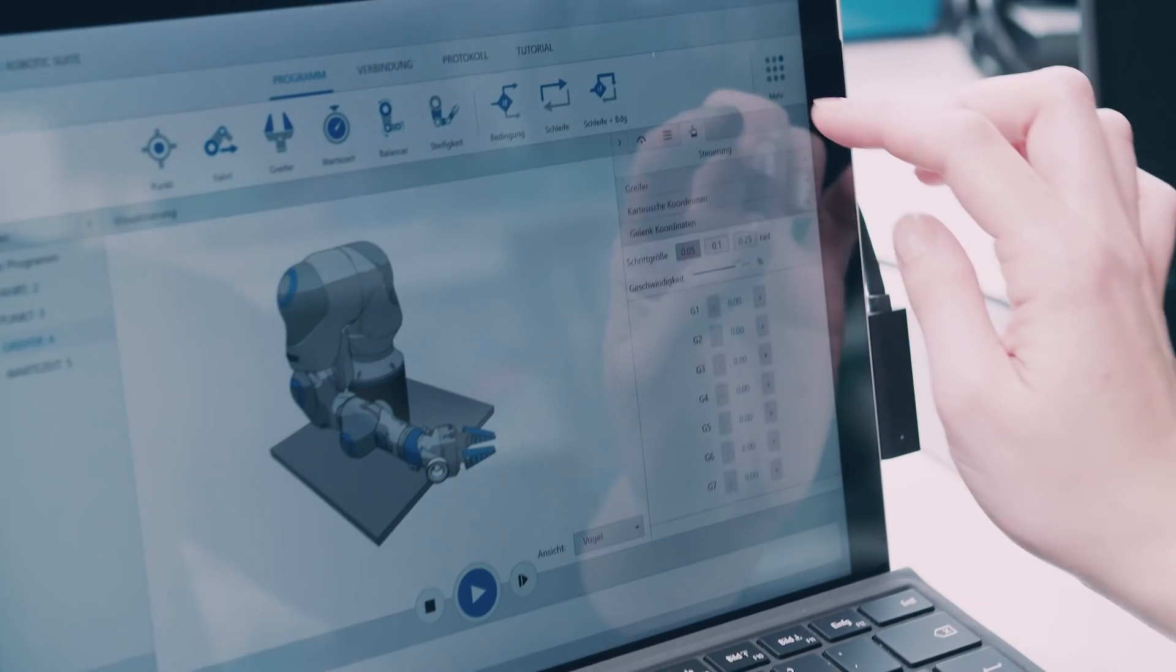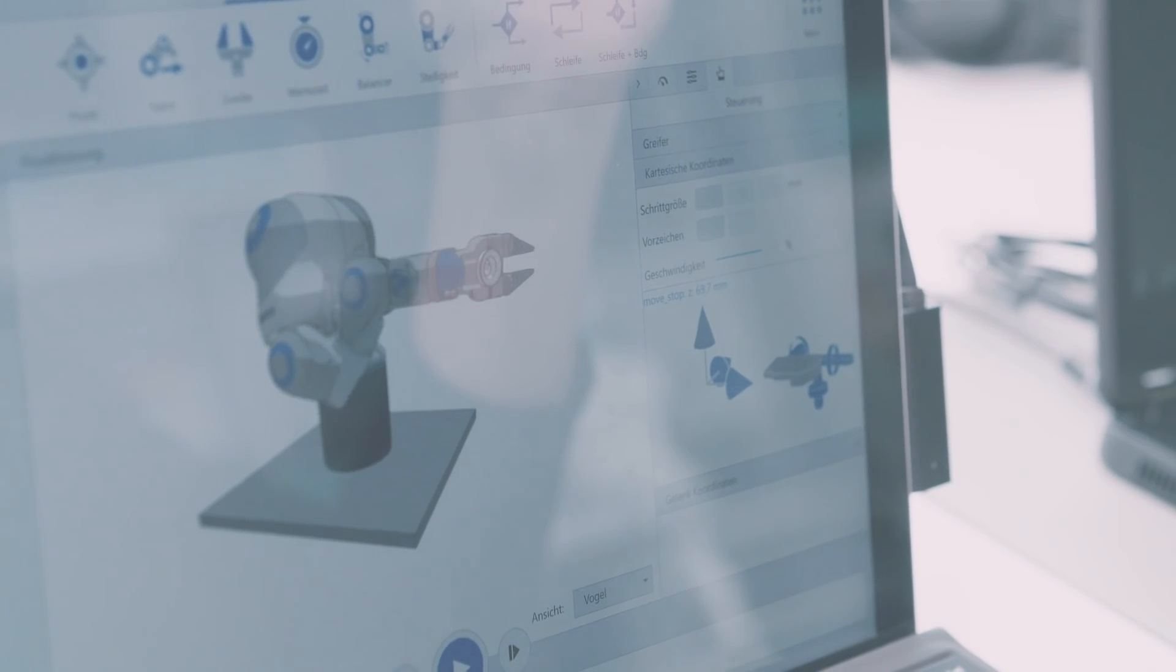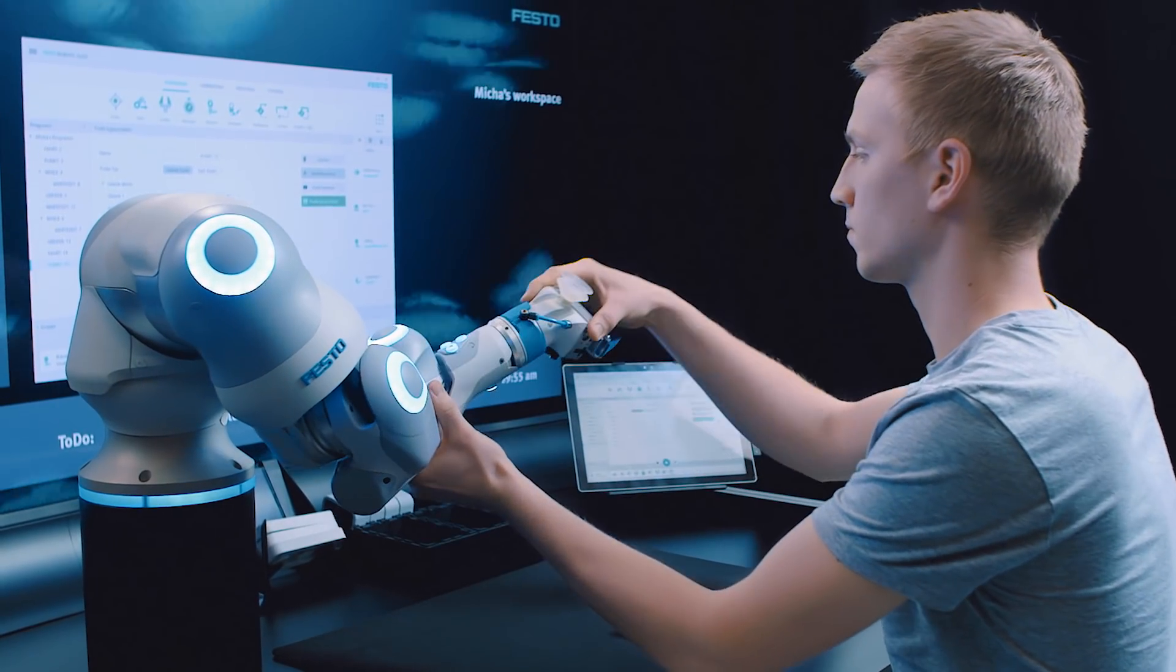The user can make fine adjustments to the robot using a directional pad. For bigger changes in the movement, they can use the hand-guided mode and move the robot directly by hand.